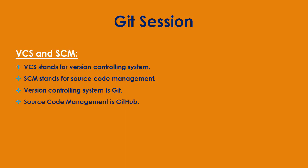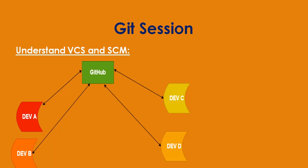To understand VCS and SCM, let's go through an example. In this diagram, there are four developers: Dev A, Dev B, Dev C, and Dev D. Dev A and Dev B are back-end developers, Dev C is a UI developer, and Dev D is a database developer.